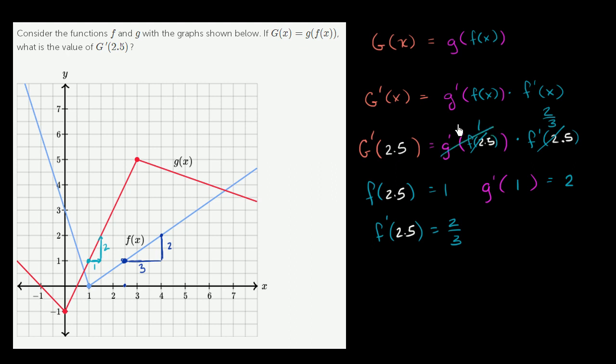So this whole thing evaluates to 2. And so this simplifies to 2 times 2 thirds, which is equal to 4 thirds. So we could write G prime of 2.5 is equal to 4 thirds. This is a pretty neat problem because we didn't get to see the actual function definition for G of x. But just using the chain rule and the information they're giving us, we were able to figure out what the value of this derivative is when x is equal to 2.5.